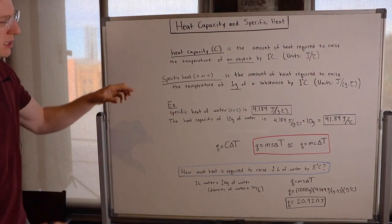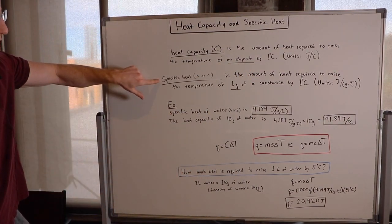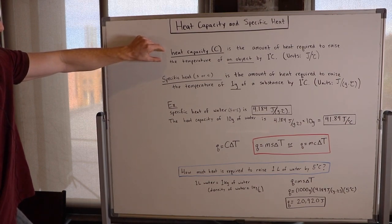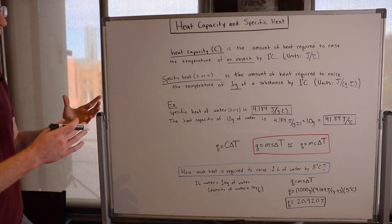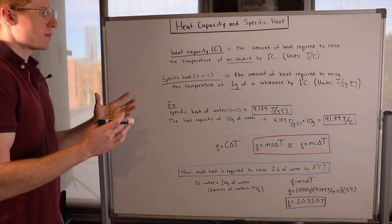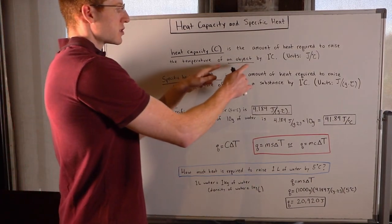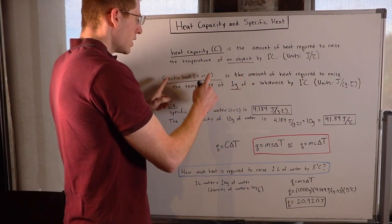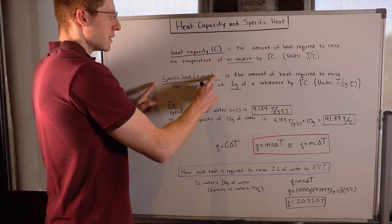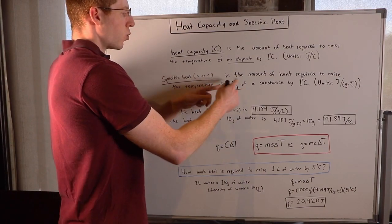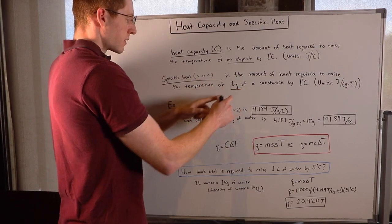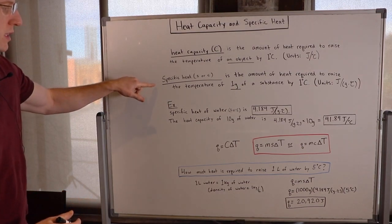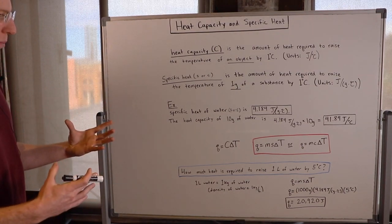In practice, specific heat is more practical for solving problems, while heat capacity is more of an important concept to just think about and understand. Because you have to actually tell heat capacity how much of the object you have, while specific heat is very useful in that we know it's one gram. Let's think about the difference between these two with an example.